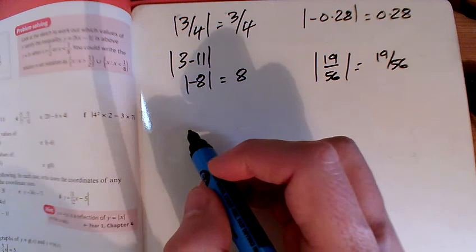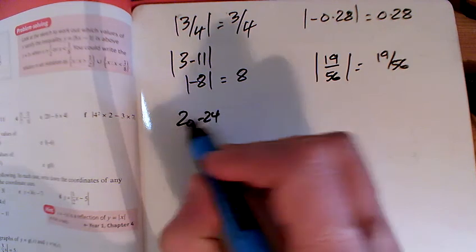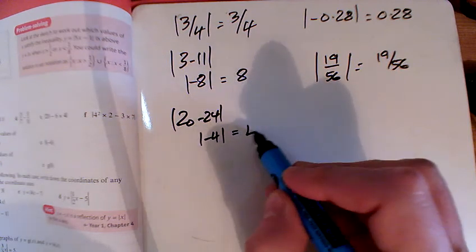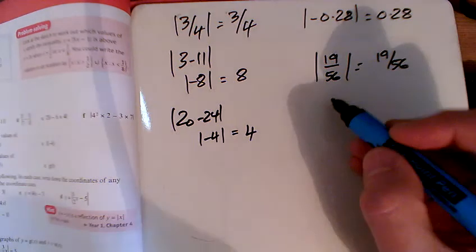BIDMAS for part E, I'm going to do 20 take away 24, that gives me minus 4, and the modulus of minus 4 is 4. And the last one,